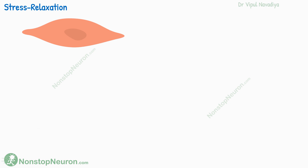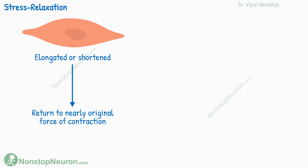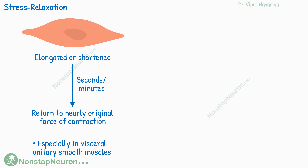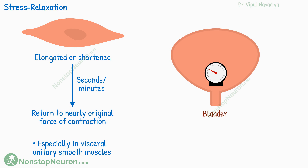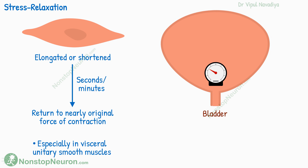The final difference is the stress relaxation phenomenon observed in smooth muscle. When a smooth muscle is elongated or shortened, it has the ability to return to nearly its original force of contraction within seconds or minutes. This is especially seen in visceral, unitary smooth muscles of hollow organs. For example, if there is a sudden increase in fluid volume in the urinary bladder, there will be stretching of the bladder's smooth muscle and the pressure inside would increase. During the next few seconds to a minute, the bladder muscles undergo stress relaxation, resulting in a decrease in pressure despite the increased volume. With the next increase in volume, the same stress relaxation occurs again.